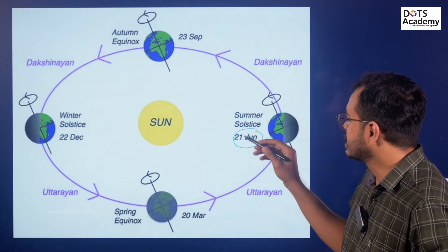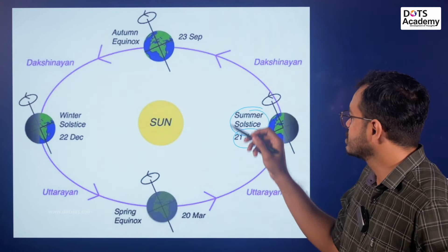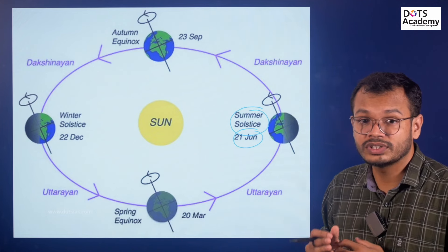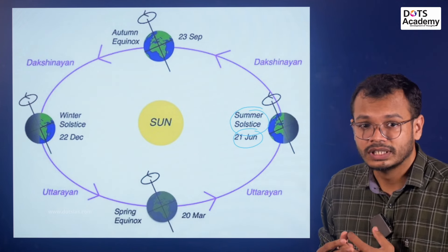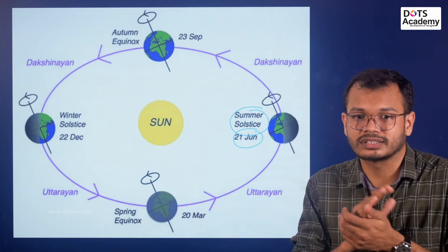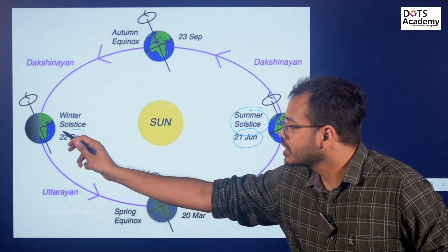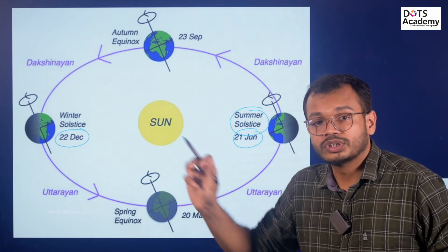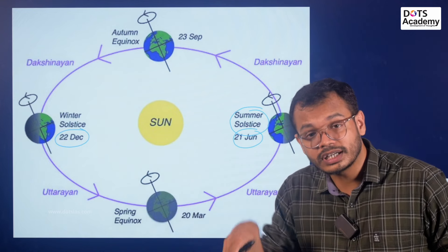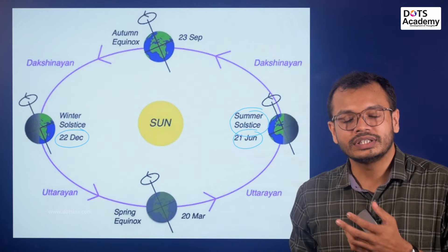On June 21st, the summer solstice — the peak of summer — the sun will be directly shining above the Tropic of Cancer in the Northern Hemisphere. On December 23rd, the peak of winter, the sun will be in the Southern Hemisphere shining directly above the Tropic of Capricorn.